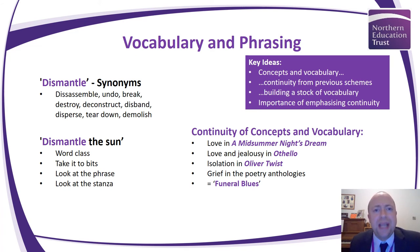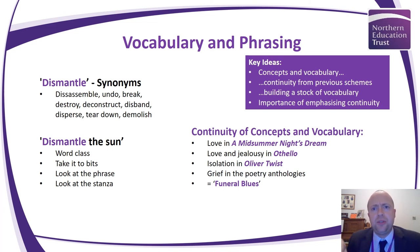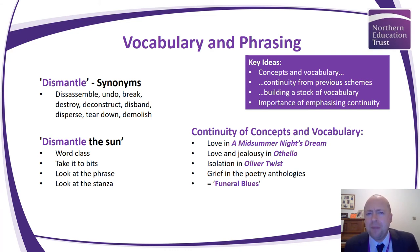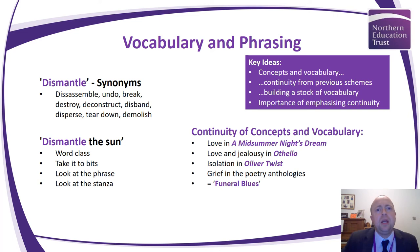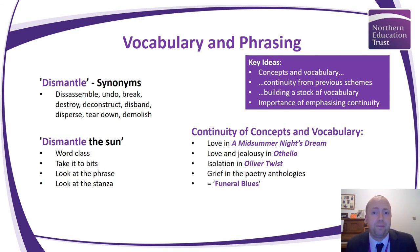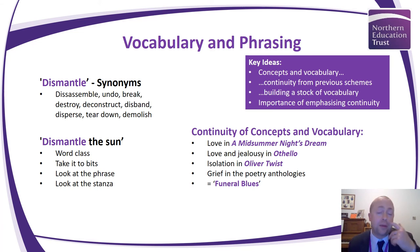We've got dis, which can mean separate or can reverse the meaning of whatever comes next. We can then look at it in the phrase — to do something the opposite in relation to the sun. We can look at it in the verse: well, we're packing up the moon, we're pouring away the ocean, we're sweeping up the wood. Clearly dismantle refers to getting rid of the sun. We may not arrive at the perfect definition, but if we follow those stages we'd probably end up somewhere pretty close. It can also be useful to consider alternatives and synonyms. Auden chose dismantle, but he could have chosen disassemble, undo, break, destroy, deconstruct, disband, disperse, tear down, demolish. So why dismantle? It might be to do with the syllable count, the rhythm, the connotations of the word, how strongly the word expresses the idea.